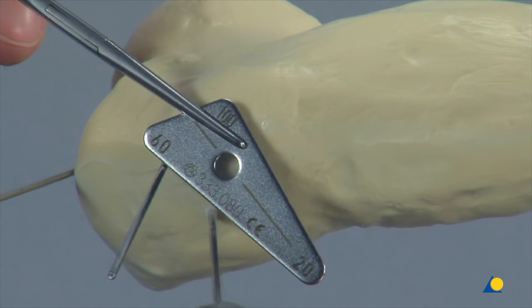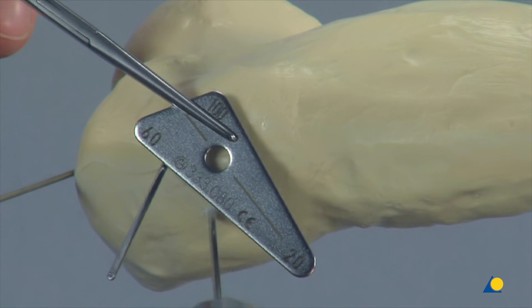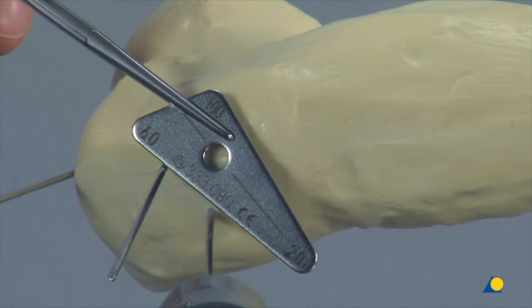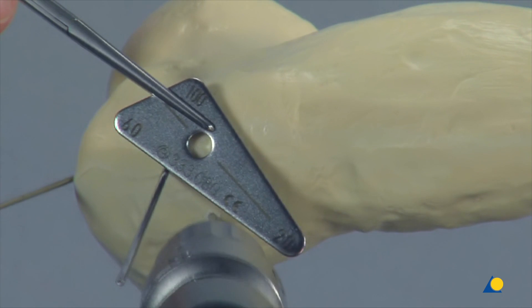A third K-wire is inserted parallel and posterior to the second K-wire at an angle of 20 degrees in the lateral view, while a triangular positioning plate is used to help align the K-wire at a 70 degree angle to the vertical axis of the shaft of the femur.